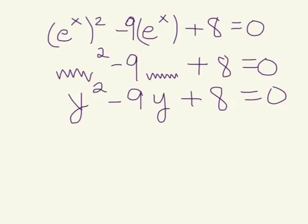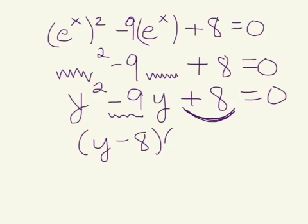And so we were able to factor this by asking ourselves what two numbers did we multiply together to get a positive 8, but we had to add together to get a negative 9. So that's going to be y minus 8 times y minus 1 is equal to 0.